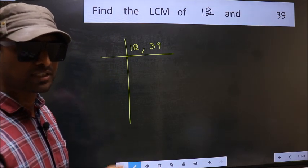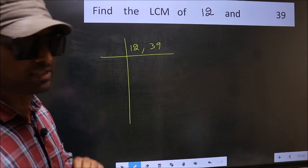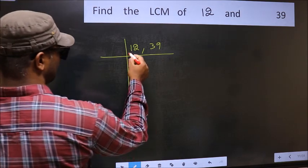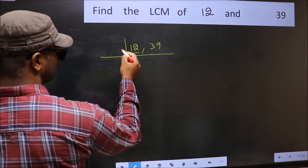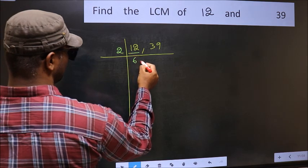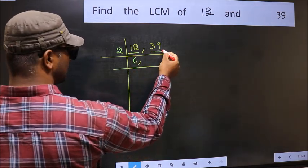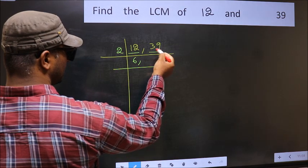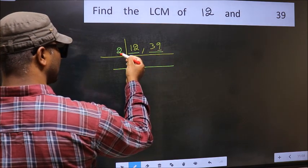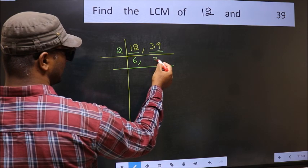Now you should focus on the first number which is 12 here. 12 is 2, 6, 12. The other number 39, last digit 9, not even. So this is not divisible by 2. So you write it down as it is.